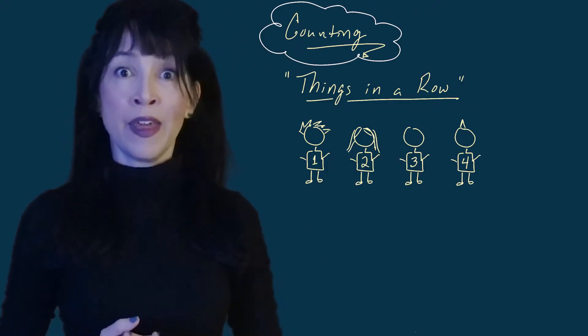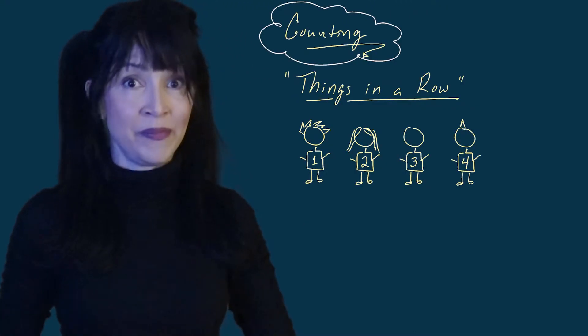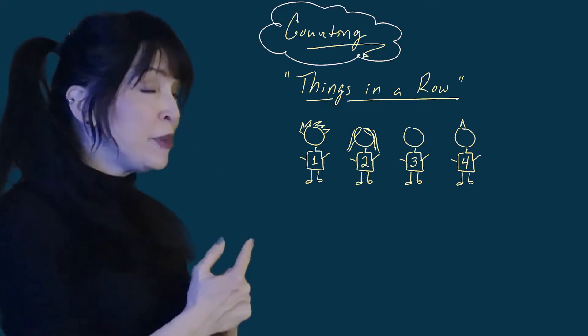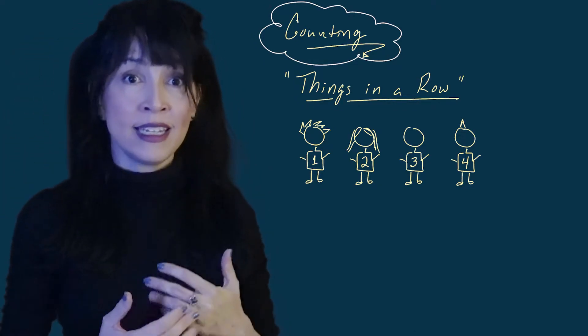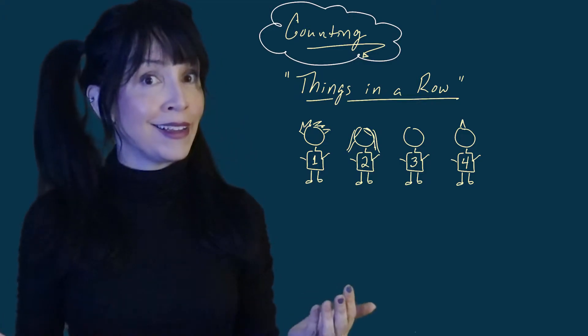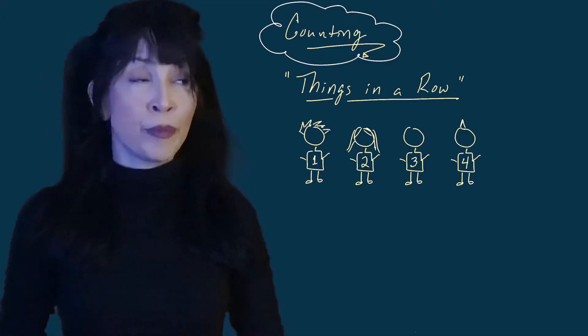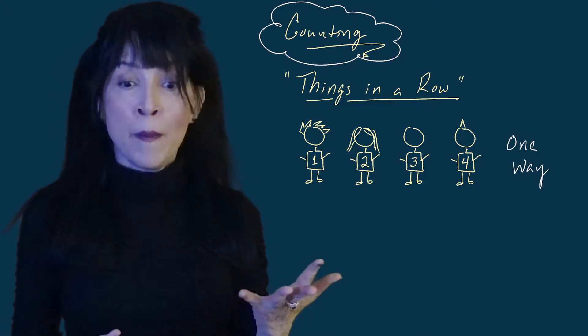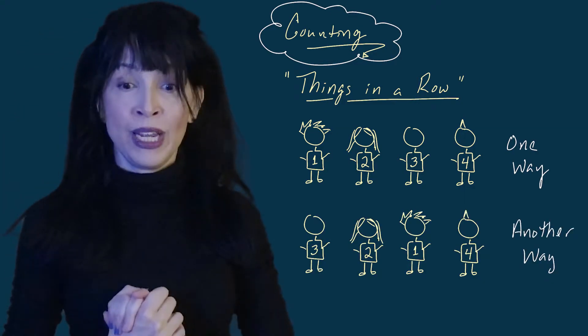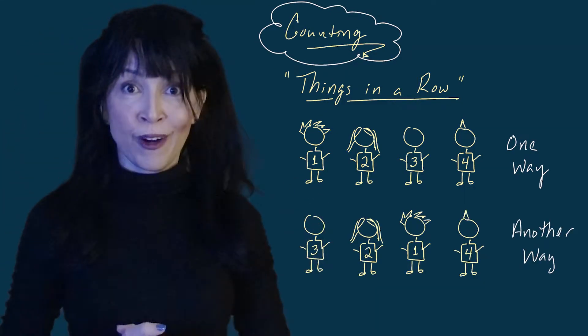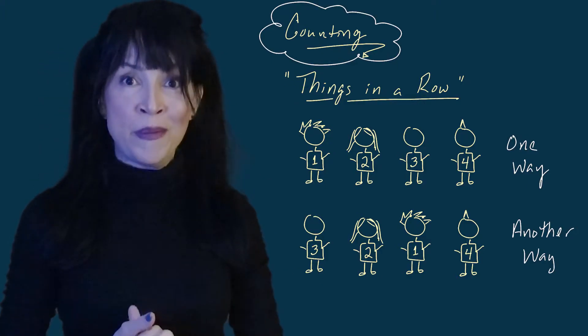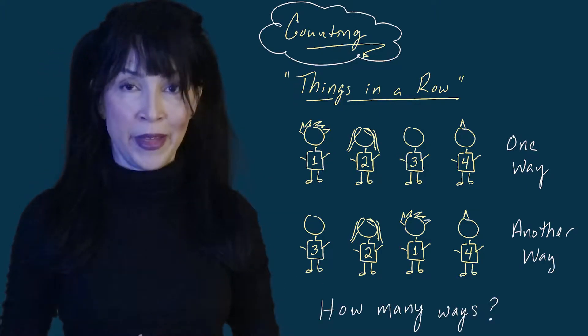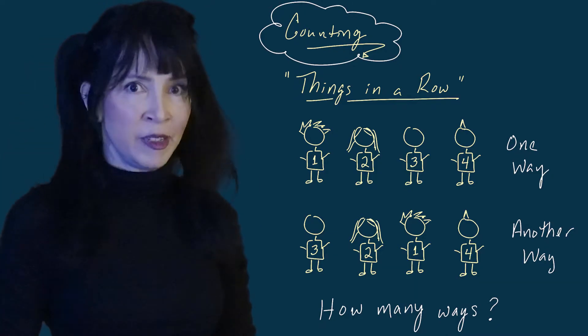I have four friends and conveniently their names are one, two, three, and four, and they wore shirts with their names on them. I want to know how many different ways I can line up my friends in some sort of order. I can line them up as person one, two, three, and four, or as person three, two, one, and four. There are many other ways and I really don't want to be shuffling my friends all day.